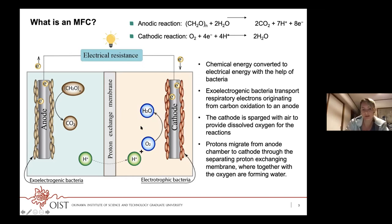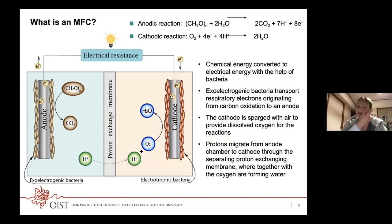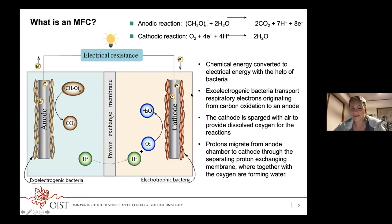The two chambers are separated by a proton exchange membrane, so all protons from the anode chamber transfer to the cathode chamber. In the cathode chamber, bacteria that can consume electrons from the electrode come into play and use these electrons to convert other chemicals.